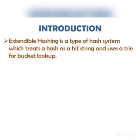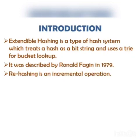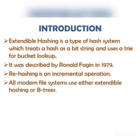Extendable hashing is a type of hash wherein the hash is treated as a bit string, and using these bits we form a structure called a trie that is used for organizing data into buckets. It was described by Ronald Fagin in 1979. Rehashing is an incremental operation wherein we increase the directory size to handle bucket overflow and also split the buckets. The hash address is always incremented by one in order to rehash the buckets. All modern file systems use either extendable hashing or B-trees for organization and searching.